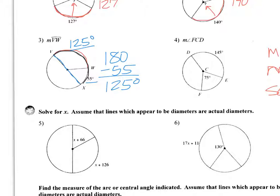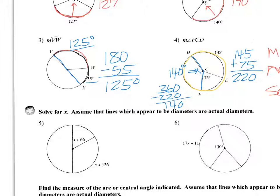This one says find angle FCD. So F, C, D. In other words, we're looking for that right there. So how are we going to do this one? Well, remember a circle all the way around is 360 degrees. So on this one, I've got to do 145 plus 75. If I do that, that gives me 220. Then I'm going to subtract that from 360. So I do 360 minus 220. And that's 140. So that means this angle right here is 140, which is also the arc measure.